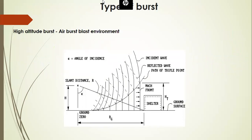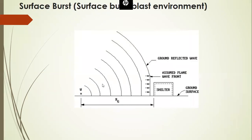The types of burst are important for further modeling. As per IS code, there are mainly two types: high altitude burst, where the attack comes from a distance through air, and surface blast, where the blast originates from the ground. In a surface blast, the wave form appears as a straight line — similar to a UDL form.